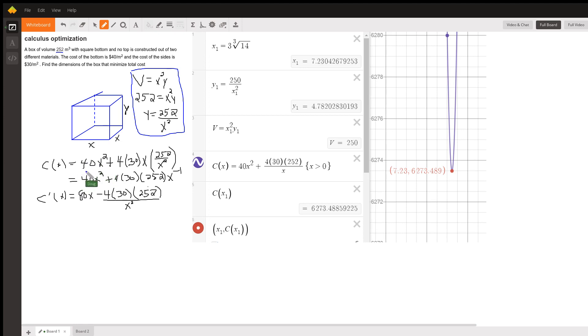This is going to represent the cost of the base. As far as the sides go, there's four sides, each with an area of x times y, and x times y times 4 would give me the total number of square meters, and each of those square meters is $30, and of course I use this value for y in the cost function so that I have the cost in terms of the variable x.